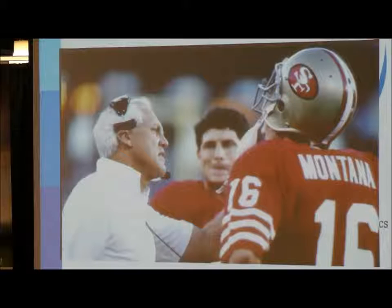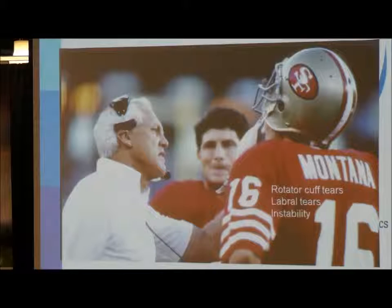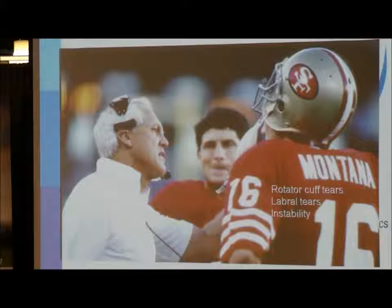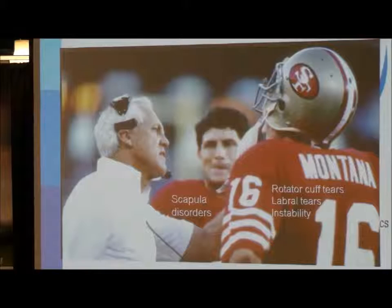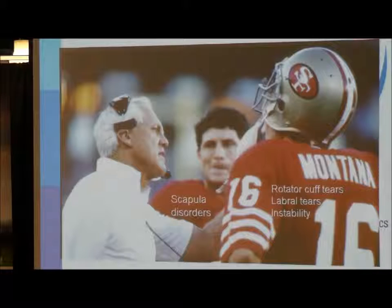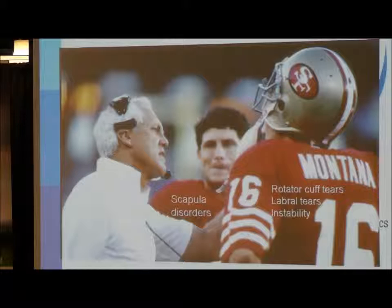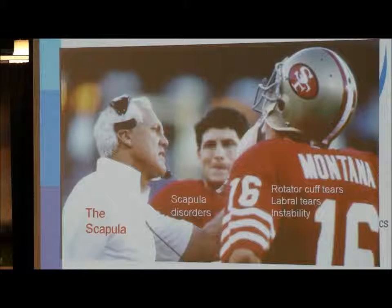So what does this have to do with the scapula or the shoulder? As clinicians, we all have our tiers of diagnoses based on how commonly we see the pathology. Your first tier is rotator cuff tears, labral tears, and instability — what comes to mind first when evaluating patients, especially athletes. Second tier, less commonly, are scapula disorders, which are often overlooked. But behind all of these diagnoses, there is usually a problem with the scapula. My hope is that after this talk, you won't overlook it.